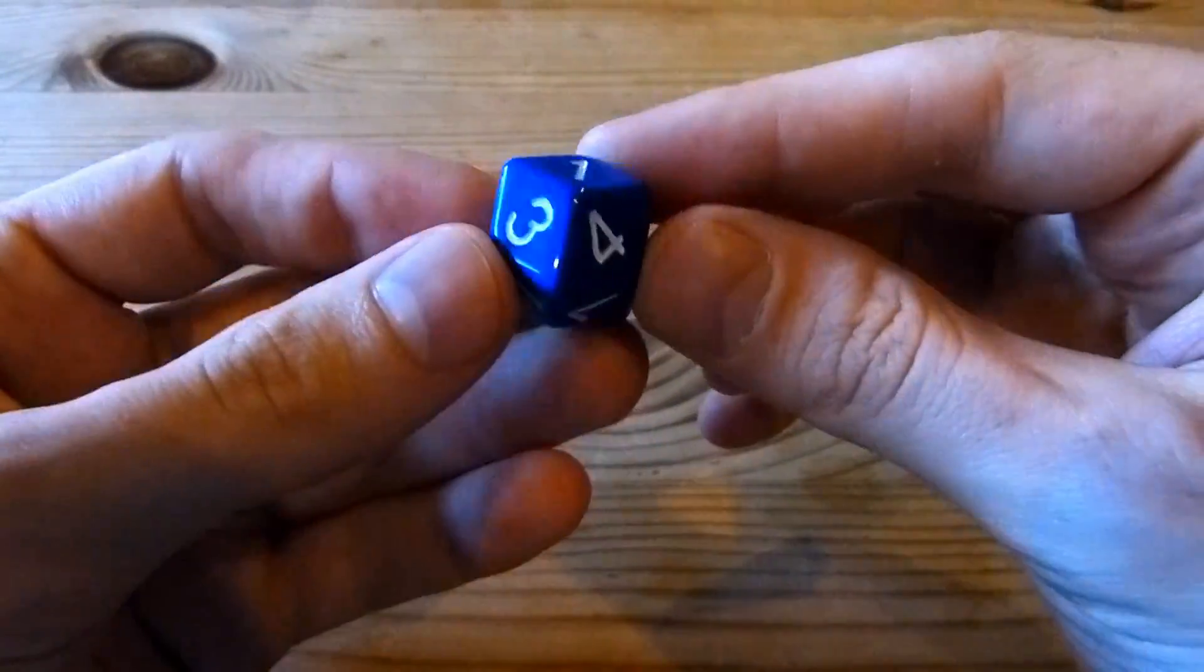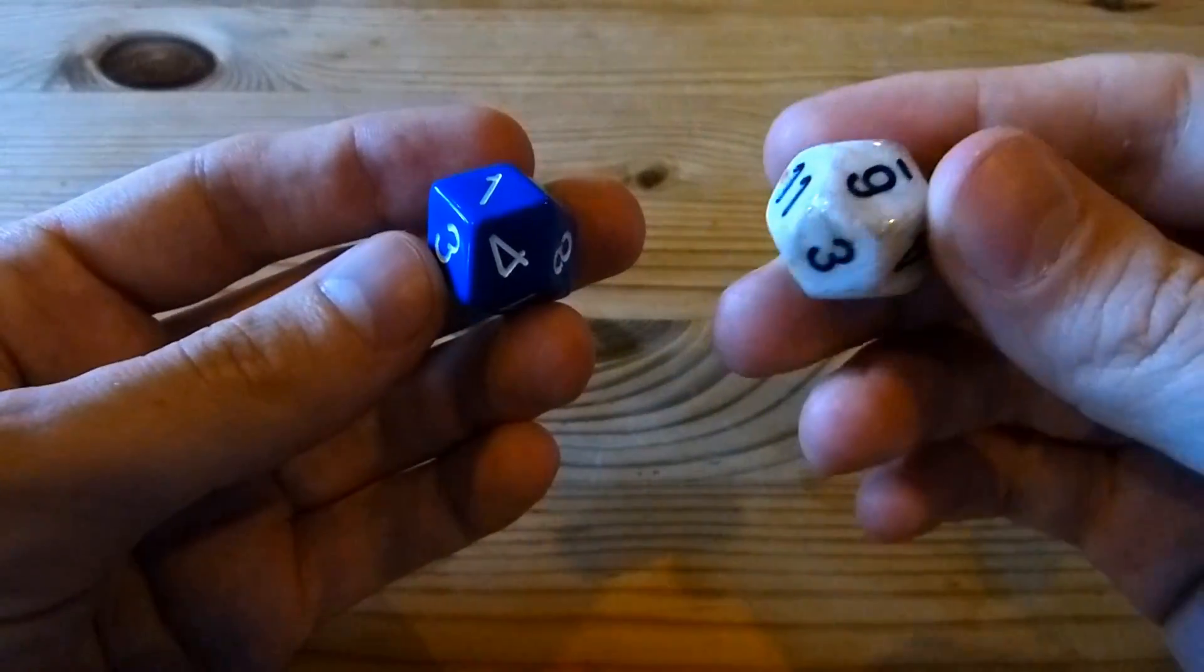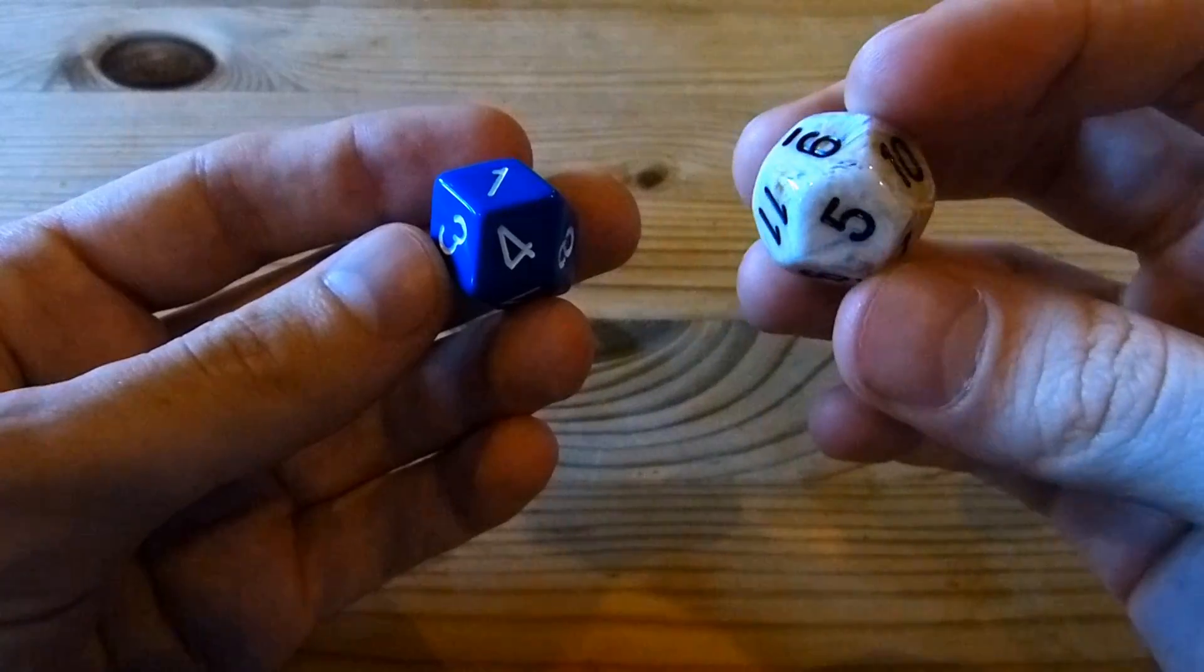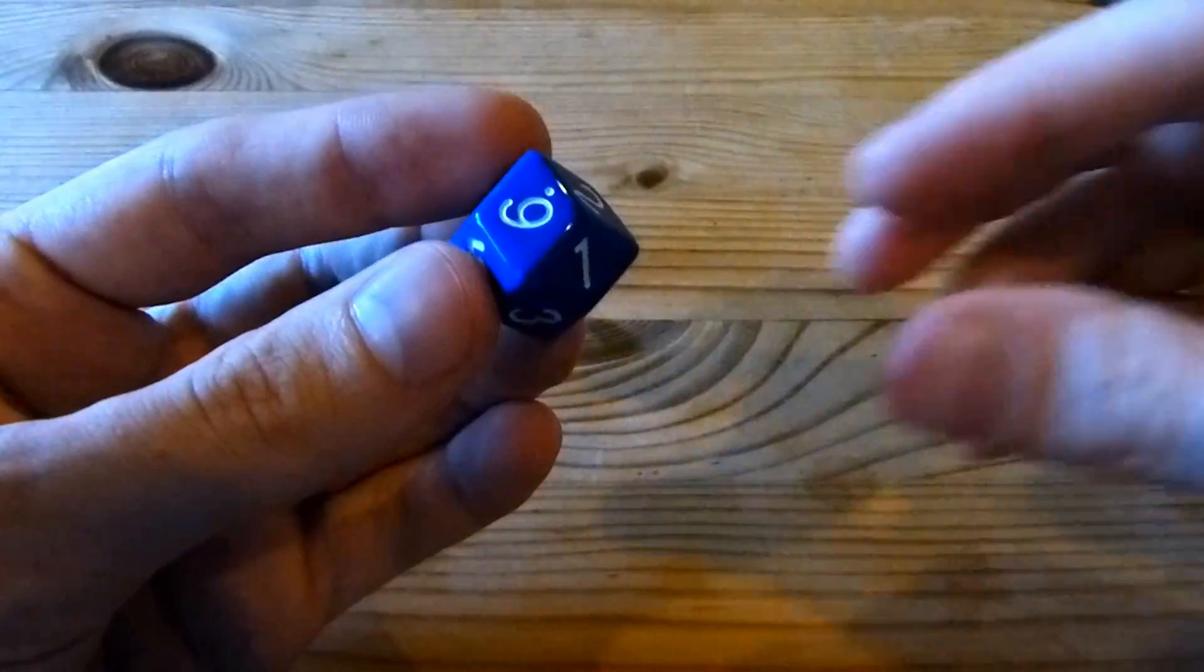So this is a 12-sided die. This is a different shape from the usual 12-sided die, which is a regular dodecahedron that has 12 pentagonal faces. This has 12 rhombic faces.